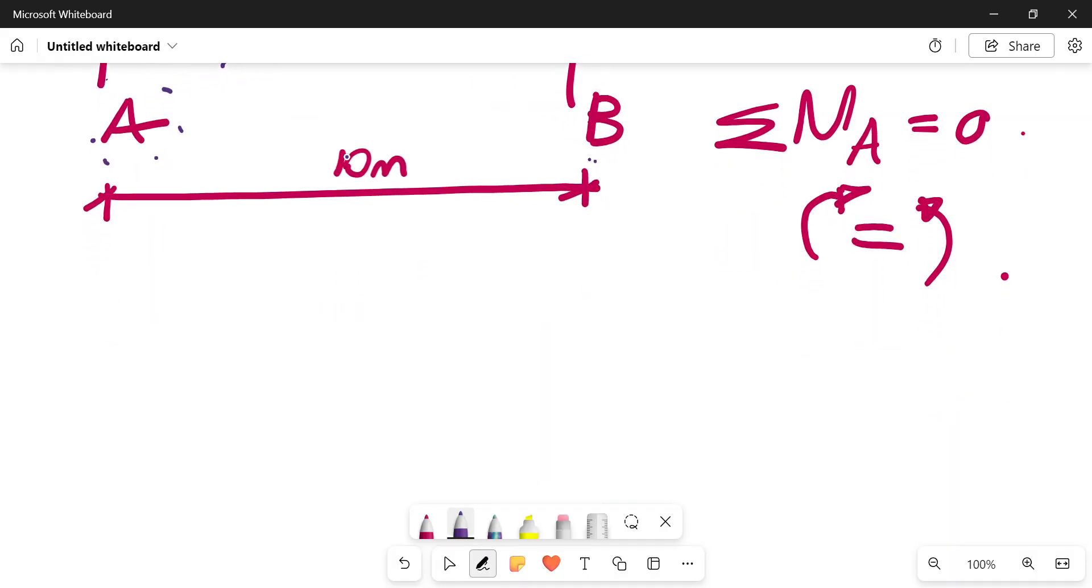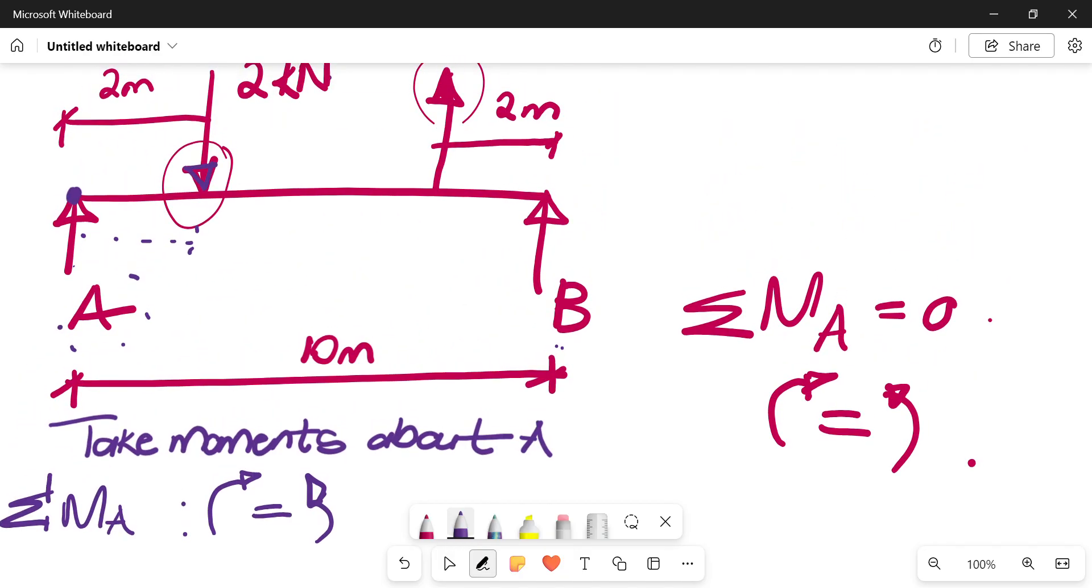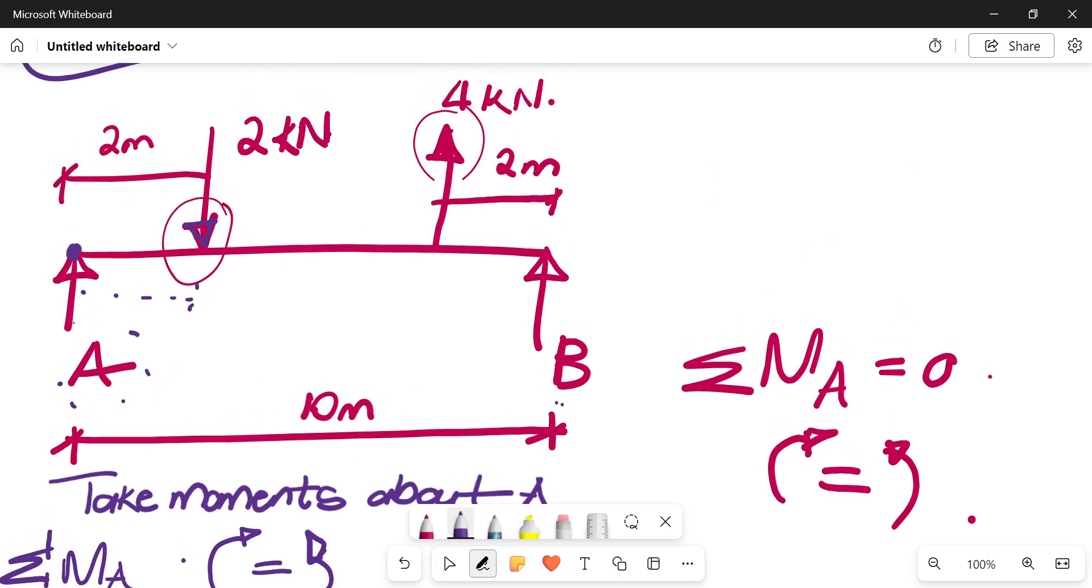So let's calculate it. So we are taking moments about A, okay? Moments about A, then we say clockwise is equals to anticlockwise. Essentially, we're just saying there will be a difference in signs. And for it to be in equilibrium, then the clockwise should be equal to the anticlockwise side. So if you're standing at A, how is this 2 kilonewton behaving? If you're standing at A, your 2 kilonewtons pushes your beam this way. That's anticlockwise. Your 4 kilonewtons is pushing it this way. That's anticlockwise. Your RB is pushing it that way. That's also anticlockwise. So this will now help you in terms of coming up with the signs.